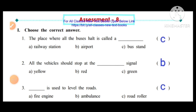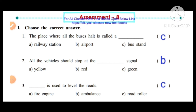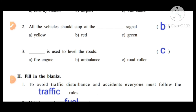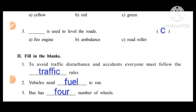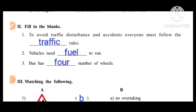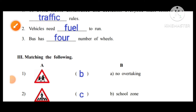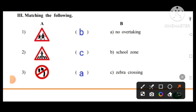Assessment 8: choose the correct answer. The place where all the buses halt is called — option C: a bus stand. All vehicles should stop at the red signal. Road roller is used to level the roads. Fill in the blanks: to avoid traffic disturbances and accidents, everyone must follow the traffic rules. Vehicles need fuel to run. A bus has four number of wheels. Match the following: option B — school zone; option C — zebra crossing; option A — no overtaking.